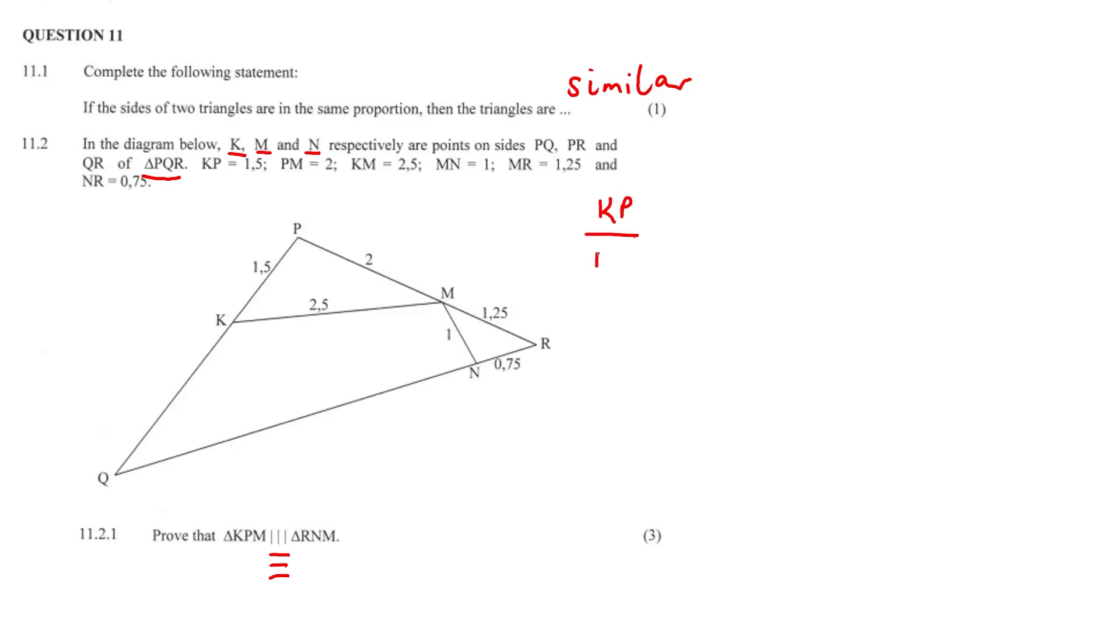So KP over RN is equal to 1.5 over 0.75. And let's continue this. You can see all of this is equal to 2. Or you could have done it the other way, like 0.75 divided by 1.5 is equal to just half. 1 over 2 is half. But I did it the other way. It doesn't matter.